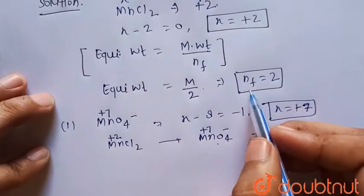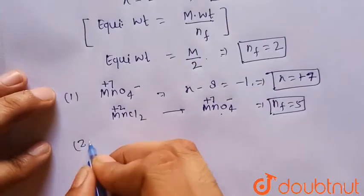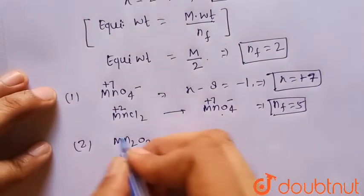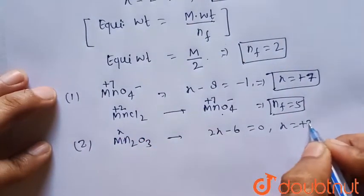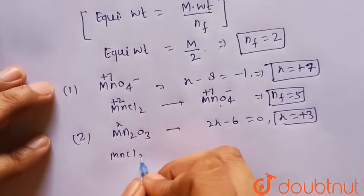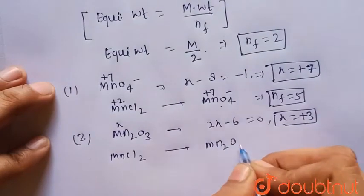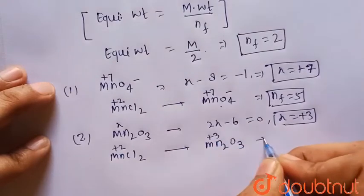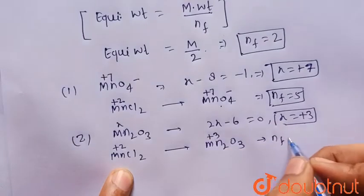Now consider the second option, Mn2O3. Here 2x − 6 = 0, so x = +3. When MnCl2 (Mn = +2) is converted to Mn2O3 (Mn = +3), the change in oxidation number is 3 − 2 = 1, so n-factor = 1. This is also not our desired answer.